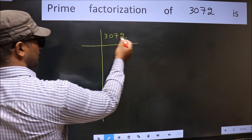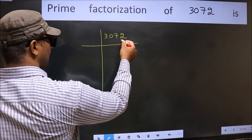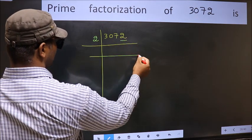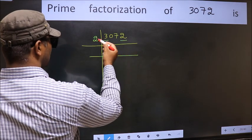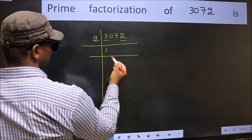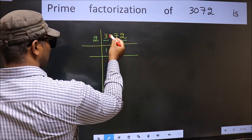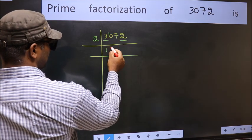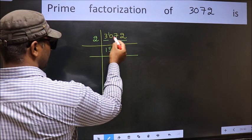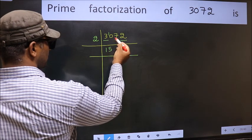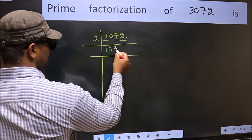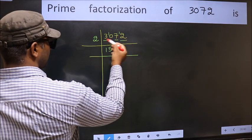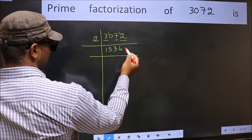Next, in this number, the last digit is 2, so take 2. First number 3 — a number close to 3 in the 2 table is 2 times 1 is 2. 3 minus 2 is 1, carried forward 10. When do we get 10 in the 2 table? 2 times 5 is 10. The other number 7 — a number close to 7 in the 2 table is 2 times 3 is 6. 7 minus 6 is 1, carried forward 12. When do we get 12 in the 2 table? 2 times 6 is 12.